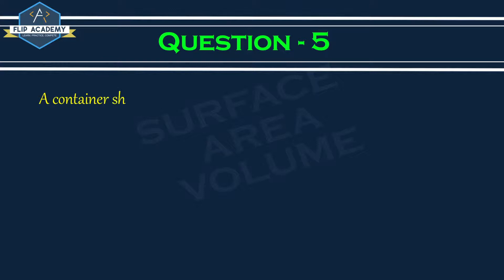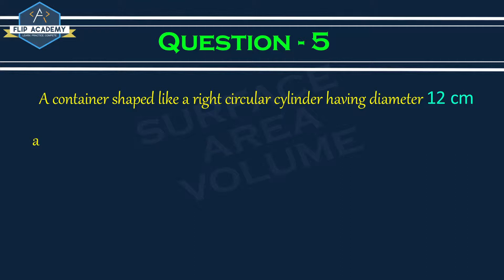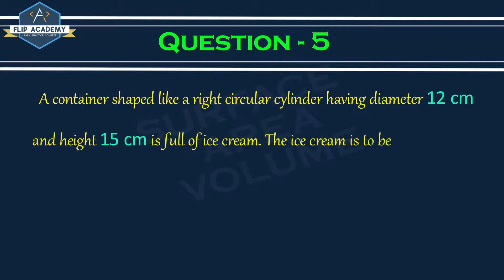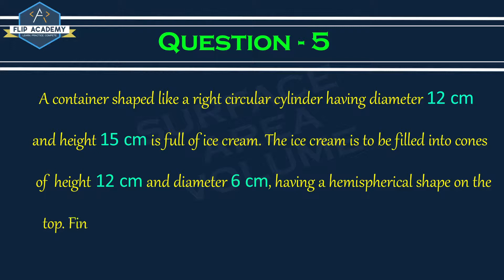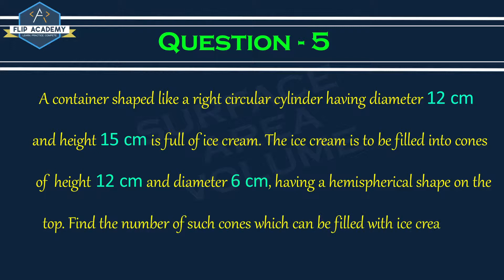A container shaped like a right circular cylinder having diameter 12 cm and height 15 cm is full of ice cream. The ice cream is to be filled into cones of height 12 cm and diameter 6 cm having a hemispherical shape on the top. Find the number of such cones which can be filled with the ice cream.